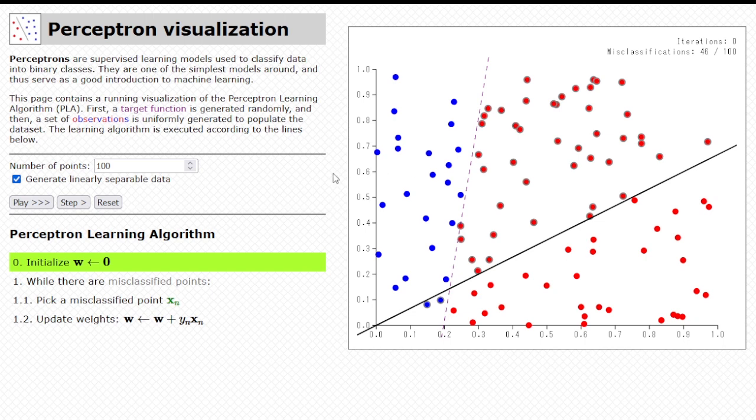So let's dive into how the plot works. Basically, the blue points belong to one class and the red points belong to the opposite class, because remember, the perceptron is a binary classification algorithm.